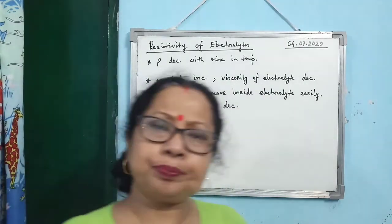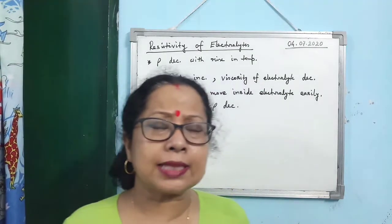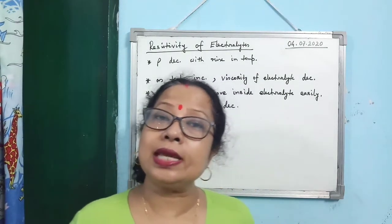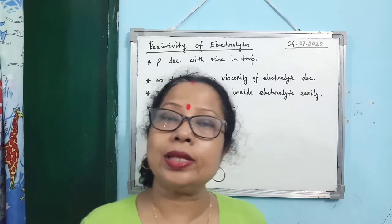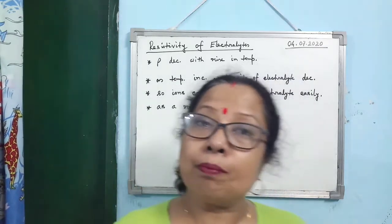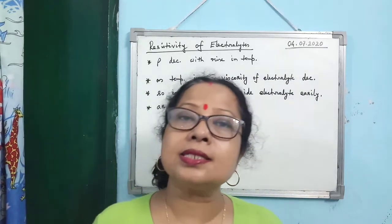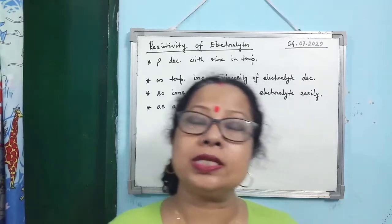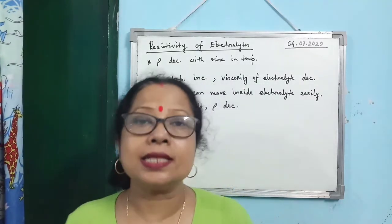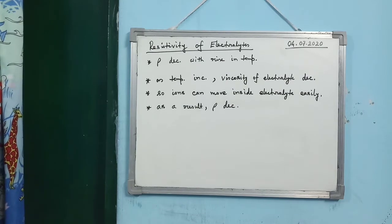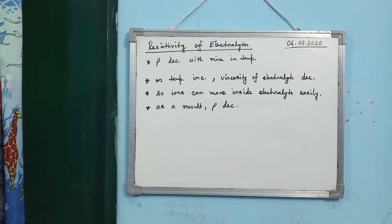To summarize: for metals and alloys, resistivity increases with rising temperature. But for semiconductors and electrolytes, resistivity decreases with rising temperature. These are the four key points you must learn and remember for your board exam.